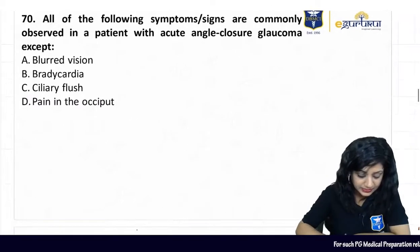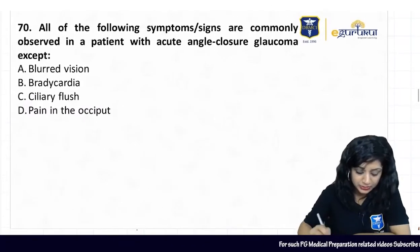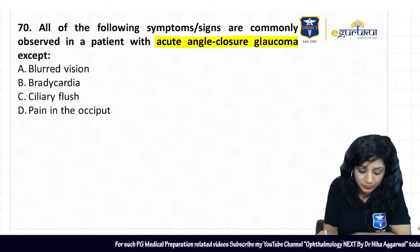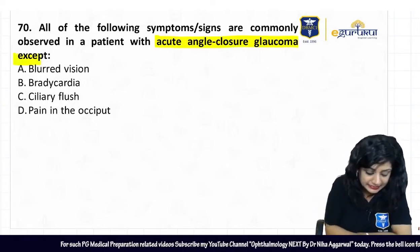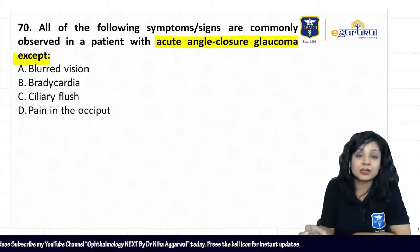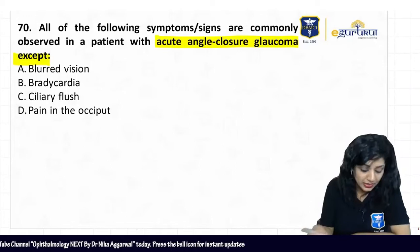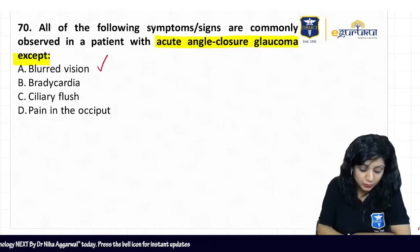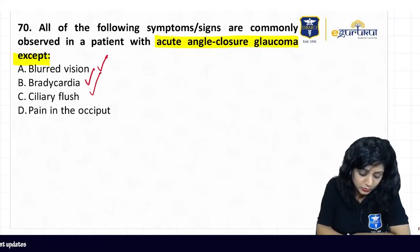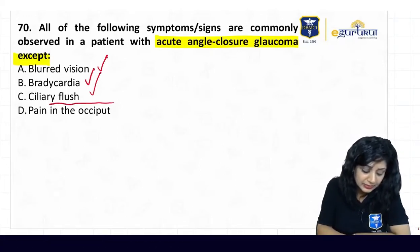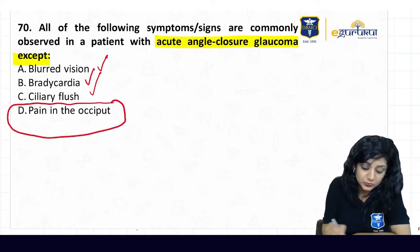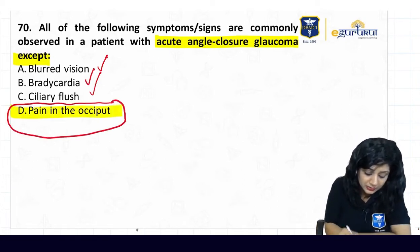All of the following symptoms and signs are commonly observed in a patient having acute angle closure glaucoma EXCEPT: In a case of acute angle closure glaucoma, we get blurring of vision, bradycardia, and ciliary flush — but will we get pain in the occipital area? No. So the answer to this question is pain in the occiput.